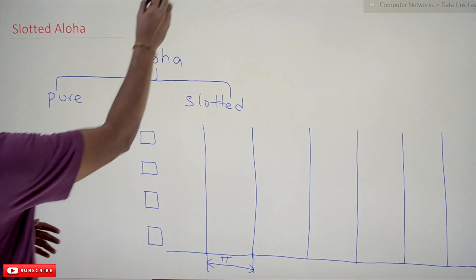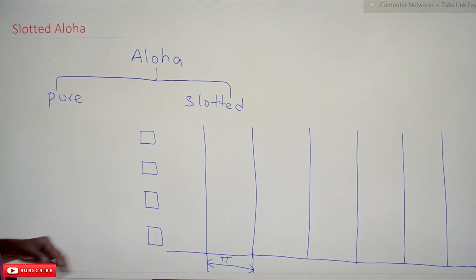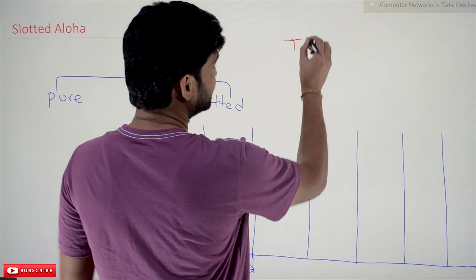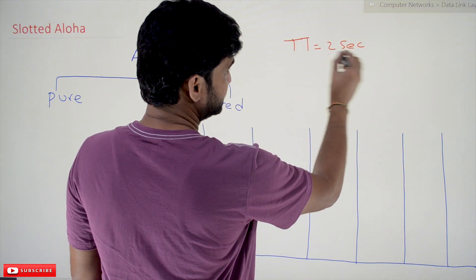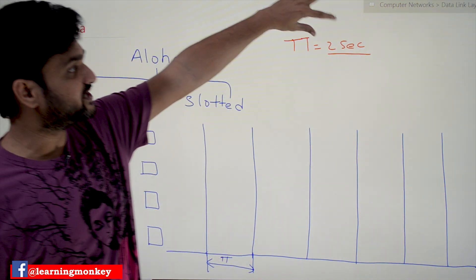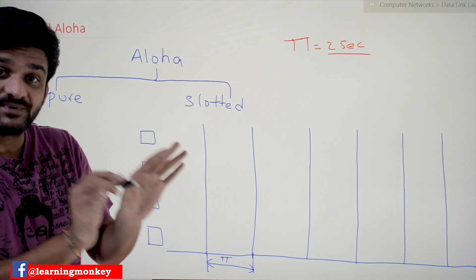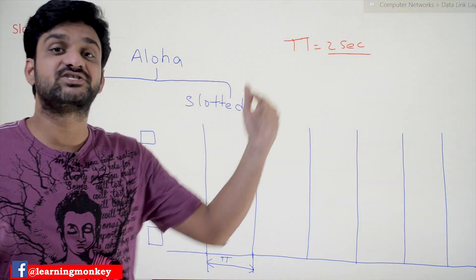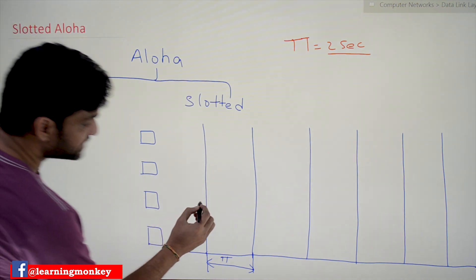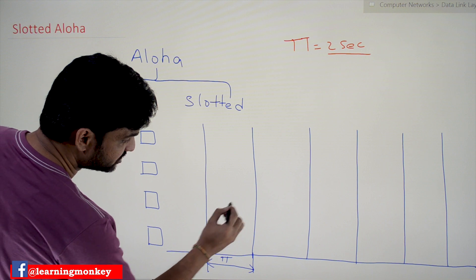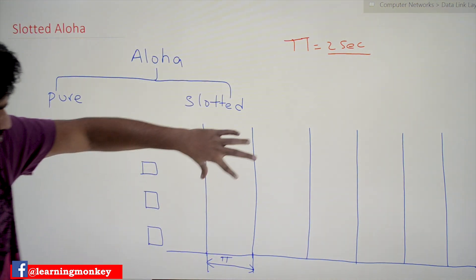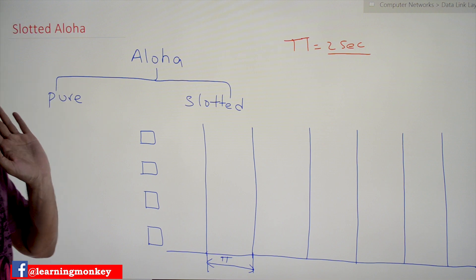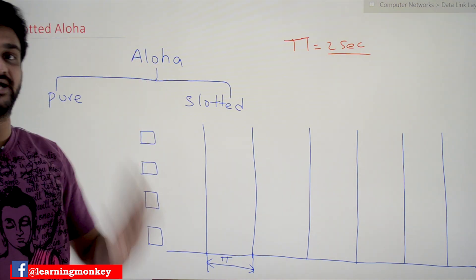In Slotted Aloha, the entire timeline is divided into slots. These are the systems on the timeline. The amount of time for each slot is equal to the transmission time. Let's assume the transmission time is two seconds. Transmission time is the amount of time taken by a data frame to get transmitted from one system to another. The entire time is divided into slots, and the time slot period is TT, which is two seconds.